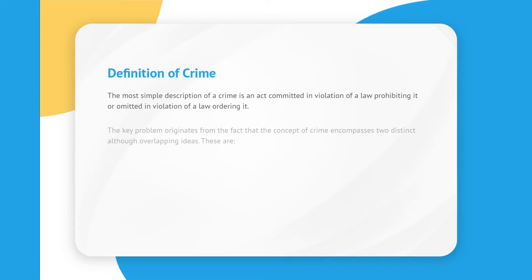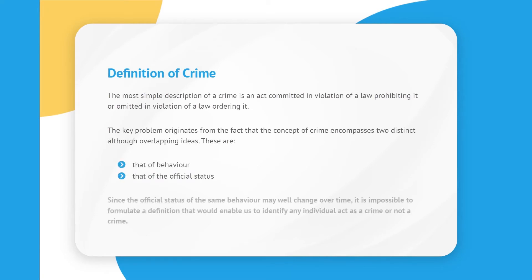Definition of crime. The most simple description of a crime is an act committed in violation of a law prohibiting it, or omitted in violation of a law ordering it. The key problem originates from the fact that the concept of crime encompasses two distinct although overlapping ideas: that of behavior, and that of official status. Since the official status of the same behavior may well change over time, it is impossible to formulate a definition that would enable us to identify any individual act as a crime or not a crime.